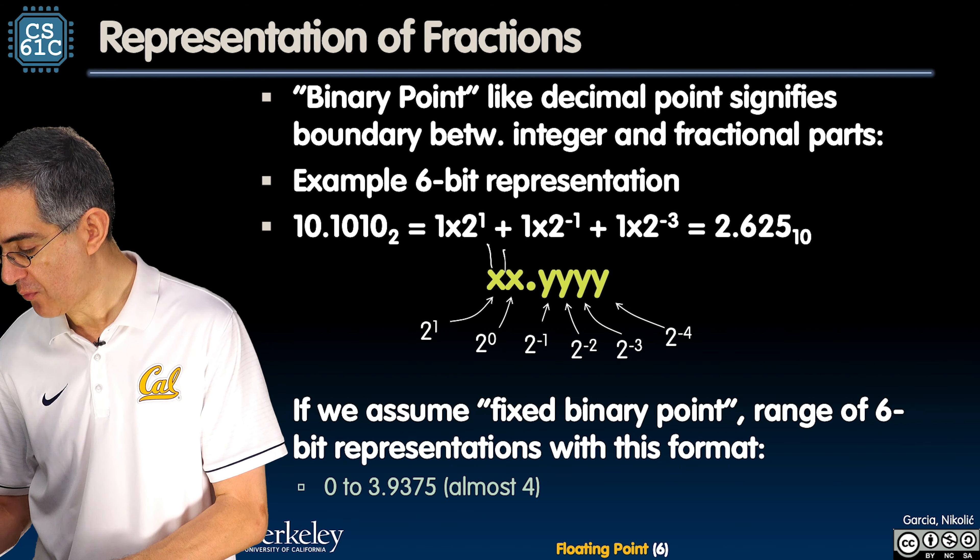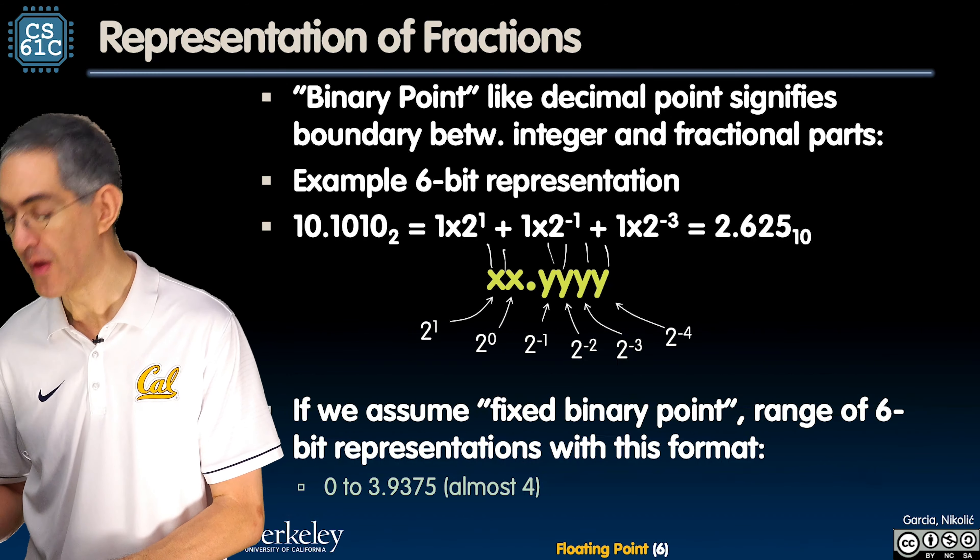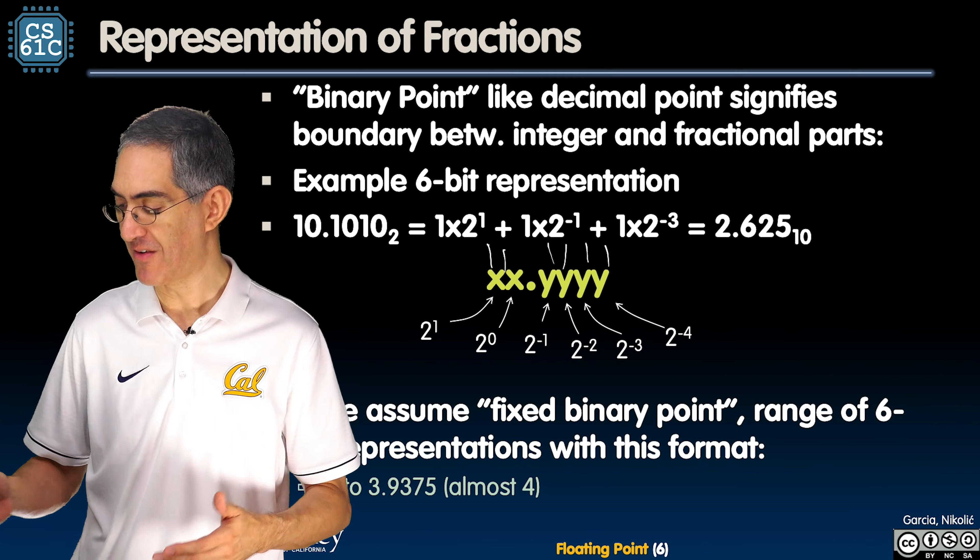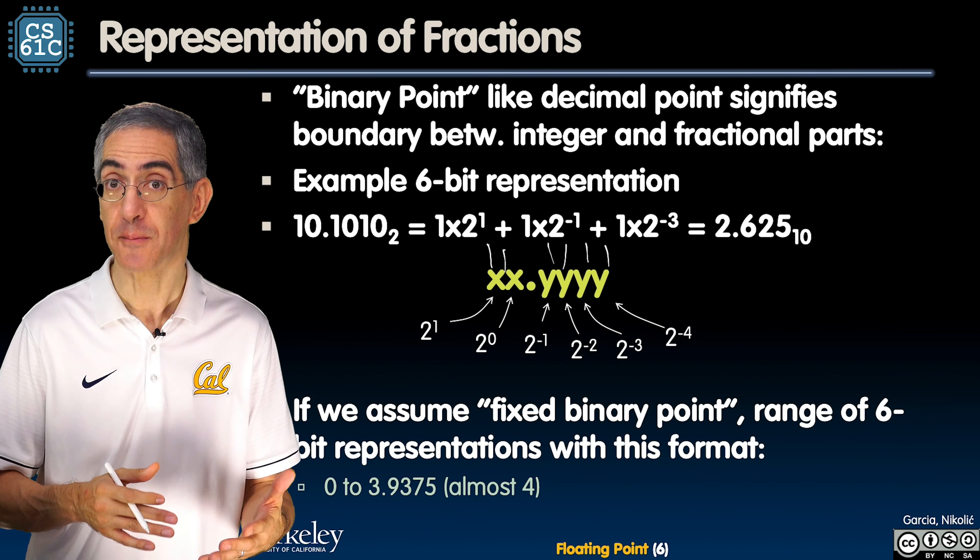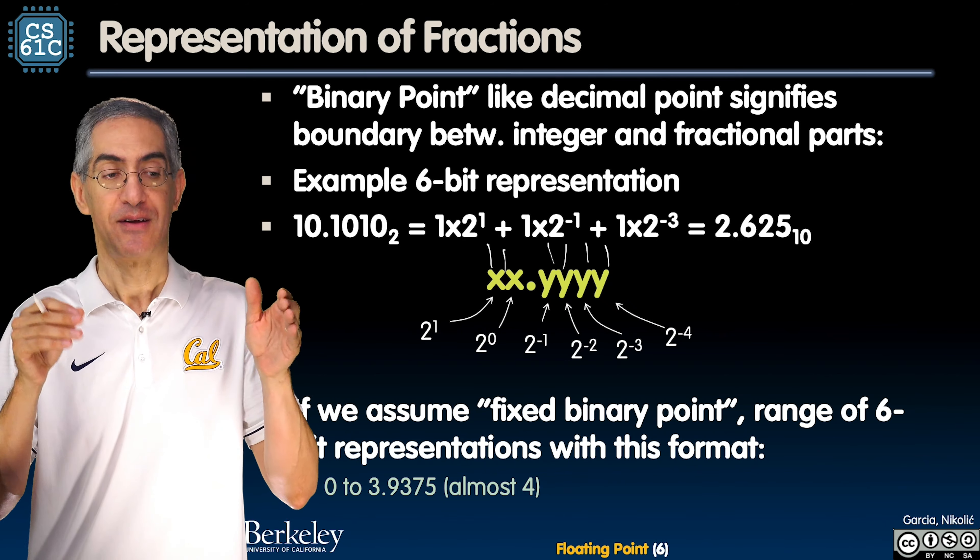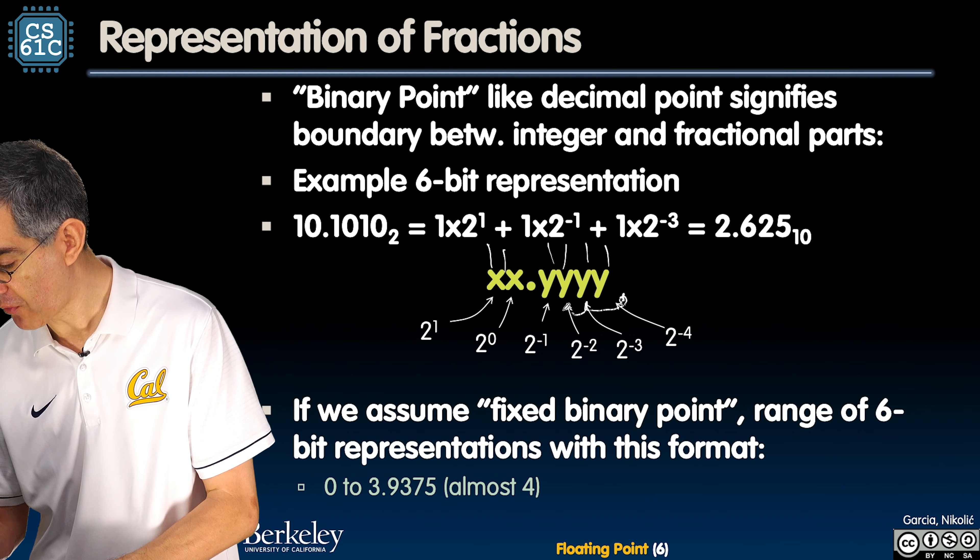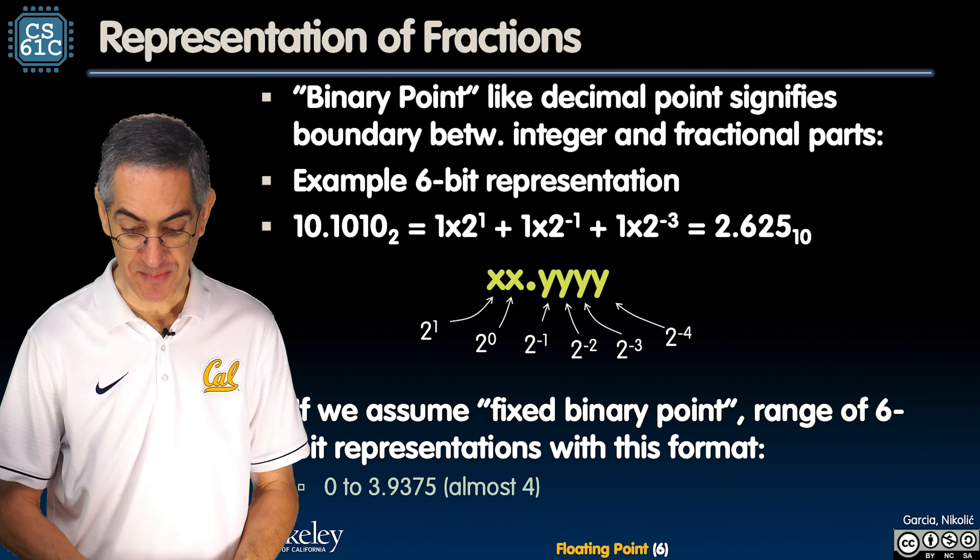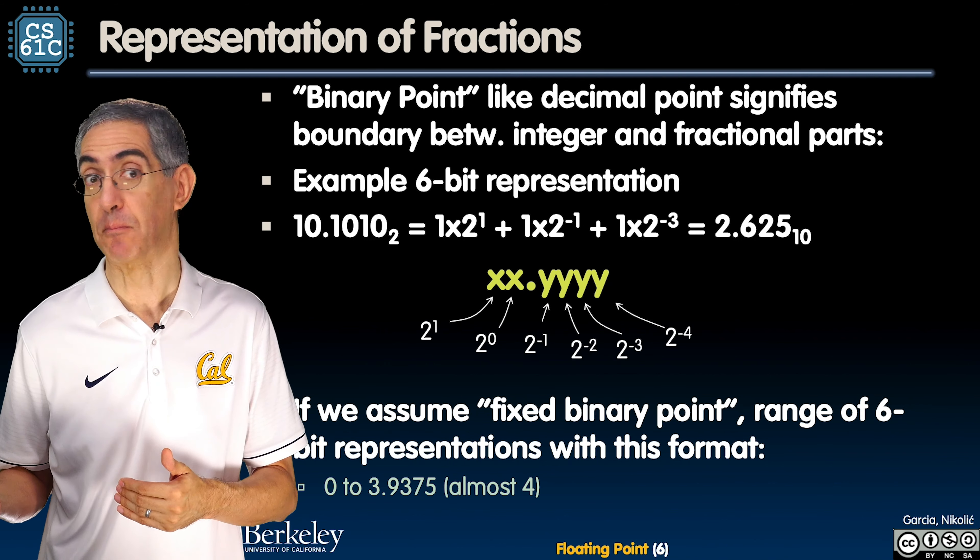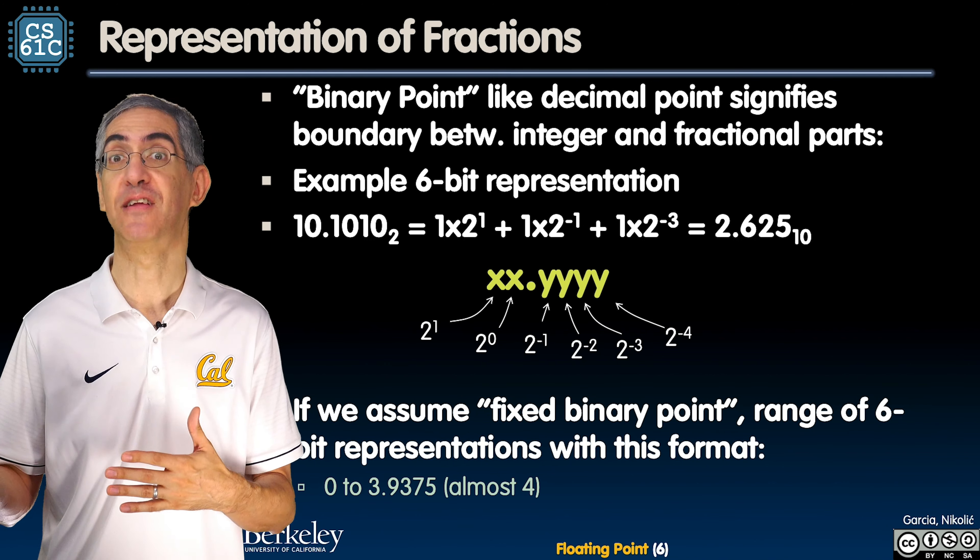But up to what? Well, the biggest number is 111111. Now what would that number be normally? If I just give you six bits, that'd be 63. But what am I doing here? I'm kind of dividing it by 16. I'm taking that decimal point that used to be here and moving it four spots this way. So I'm counting 63 over 16. That's three and 15 sixteenths.